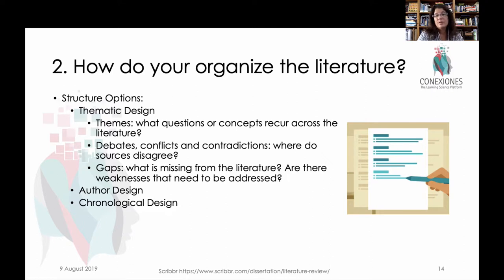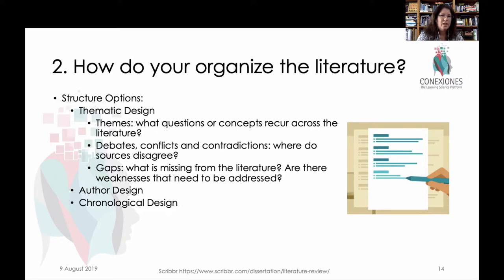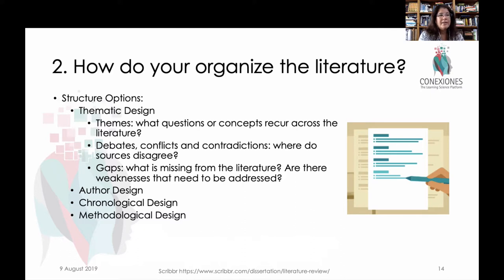Others will approach their literature review chronologically — this is what we thought in the 80s, the 90s, and nowadays. That tells a different kind of story, but it's often not as powerful as thematic design. You can bring in the chronological element during your analysis instead. Yet others use methodological design, comparing studies by how they were executed — for example, meta-analyses in the field might show one thing, while case studies show something else. I don't think author, chronological, or methodological designs are as powerful as thematic designs.